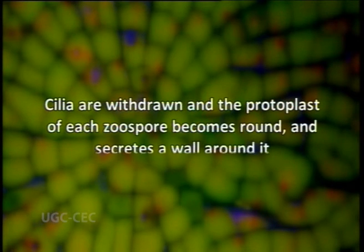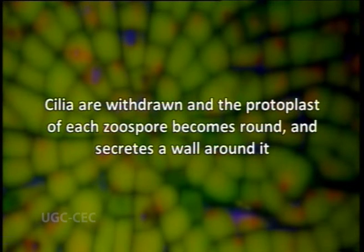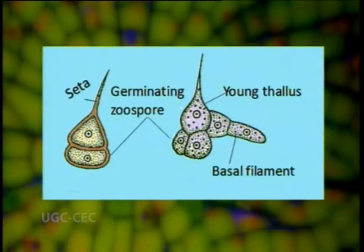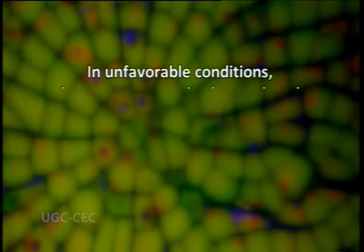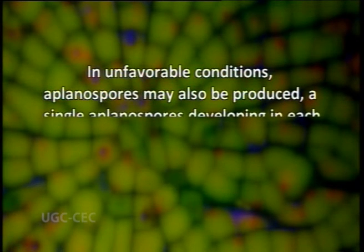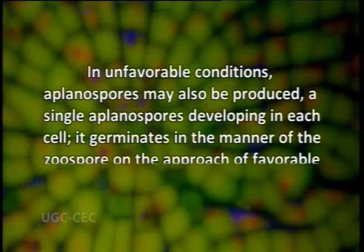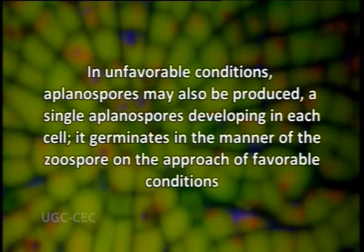The zoospores swim for about an hour and then come to rest. The cilia are withdrawn and the protoplast of each zoospore becomes round and secretes a wall around it. The protoplast of this one-cell germling divides again and again and a multicellular thallose structure is developed; some cells bear setae, and the shape of a cushion-like disc is attained. In unfavorable conditions, aplanospores may also be produced, a single aplanospore developing in each cell; however, it germinates in the same manner as zoospores on the return of favorable conditions.